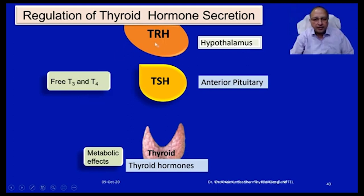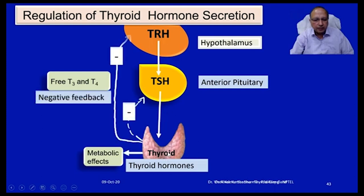Regulation of thyroid hormone secretion: the hypothalamus secretes thyrotropin-releasing hormone (TRH), which stimulates the anterior pituitary to release thyroid-stimulating hormone (TSH), which in turn causes the release of T3 and T4. These mediate metabolic effects on the body. By negative feedback regulation at both the anterior pituitary and hypothalamus levels, free T3 and T4 cause negative feedback inhibition of their own synthesis.